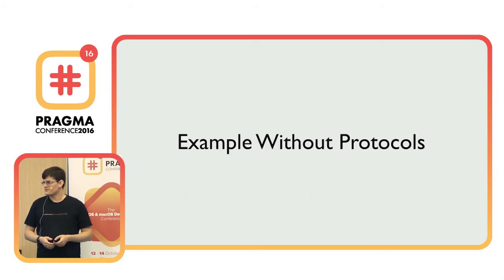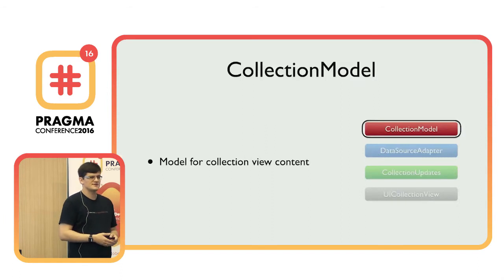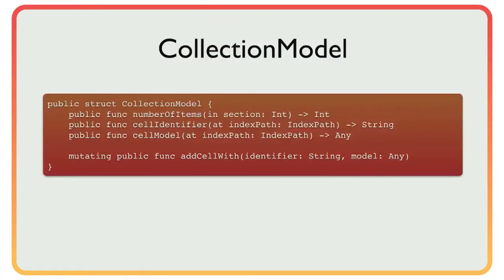The example without protocols: first, the collection model. Its task is to model the collection view content. We use a struct — not a class, because that's not cool anymore — with a couple of public functions. For simplicity I omitted number of sections. We have number of items in a section, a cell identifier at a certain index path, a cell model at a certain index path, and a method to add a cell identifier and model to the collection. I took out the implementations since this talk is about interfaces.